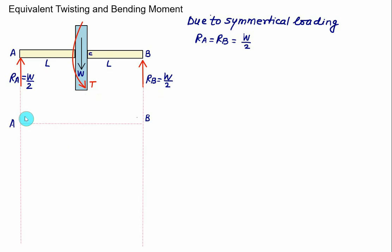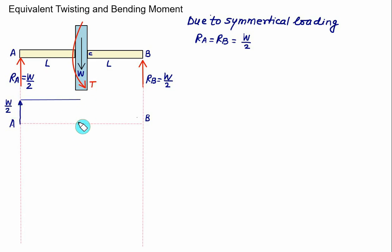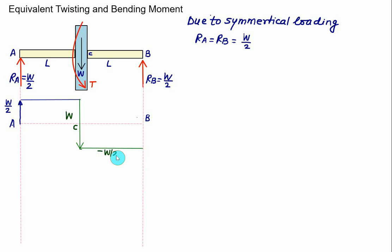We now construct the shear force diagram. At point A the reaction W/2 acts upward, so the shear force equals W/2. Between A and C no shear force is acting, so it remains constant. At point C a point load W acts downward, so the shear force drops: W/2 minus W gives minus W/2. From C to B the shear force remains constant at minus W/2, and finally at reaction RB it closes back to zero.